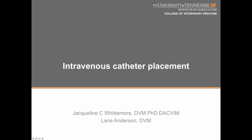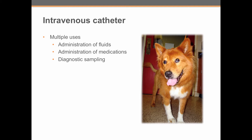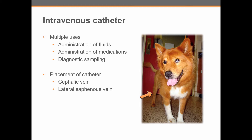Welcome to our tutorial on intravenous catheter placement. Peripheral catheters are used for multiple things, including administration of fluids and medications to sick animals, as well as diagnostic sampling when patients are in the hospital. Peripheral catheters are most commonly placed in either the cephalic vein or the lateral saphenous vein. During this lab, you're going to learn to place a catheter in the cephalic vein.